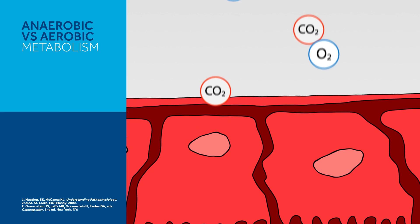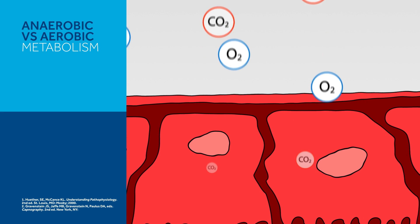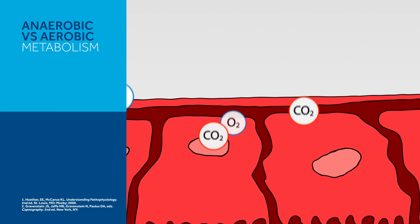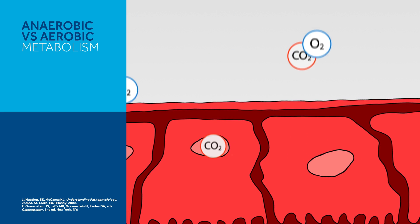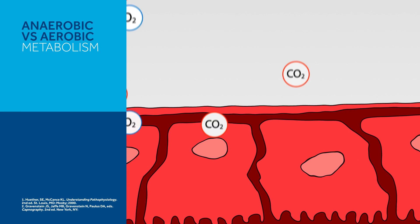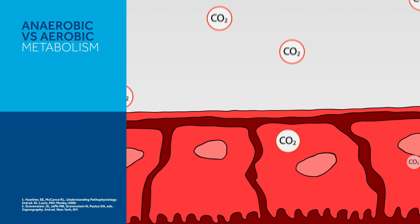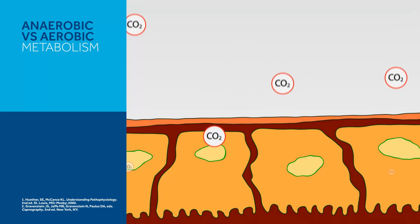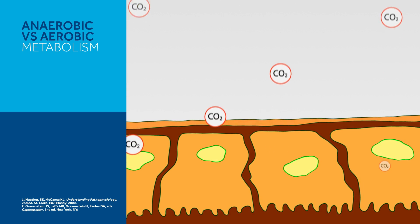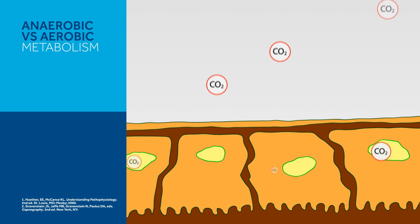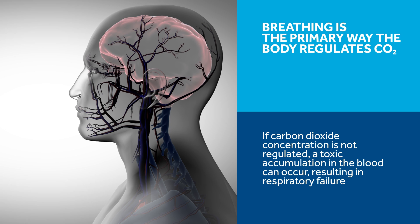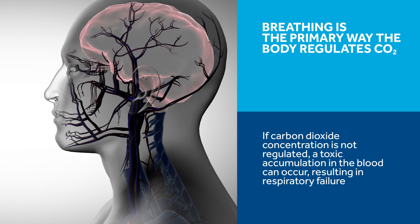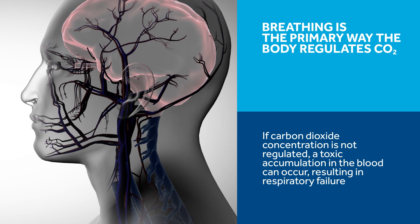The CO2 is transported from the cellular level to the lungs via the vascular system, and is removed from the lungs during the exhalation part of the breathing cycle. If oxygen is not available, a process called anaerobic glycolysis occurs. This type of anaerobic metabolism results in the production of lactate, which can cause acidic conditions in the blood. The medulla oblongata is a portion of the hindbrain that controls automatic functions such as breathing, digestion, and heart rate.